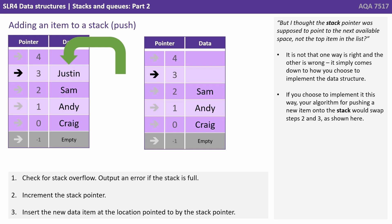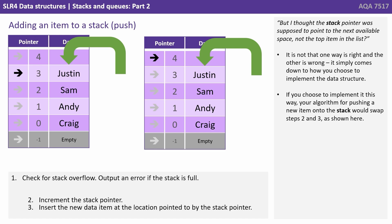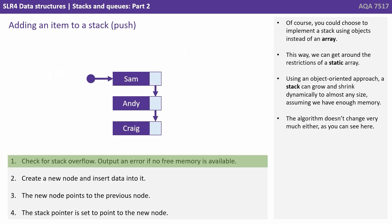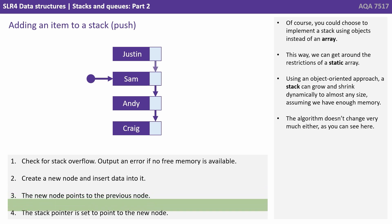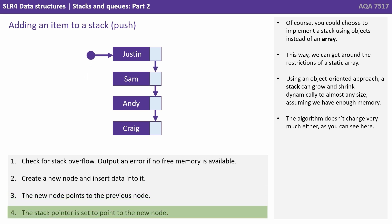You might think the stack pointer is supposed to point to the next available space rather than the top item in the list. It's not that one way is right and the other is wrong — it simply comes down to how you choose to implement the data structure. If you implement it the other way, your algorithm for pushing a new item would simply swap steps two and three. You could also choose to implement a stack using objects instead of an array, getting around the restrictions of a static array. Using an object-oriented approach, a stack can grow and shrink dynamically to almost any size, assuming we have enough memory, and the algorithm doesn't change very much.